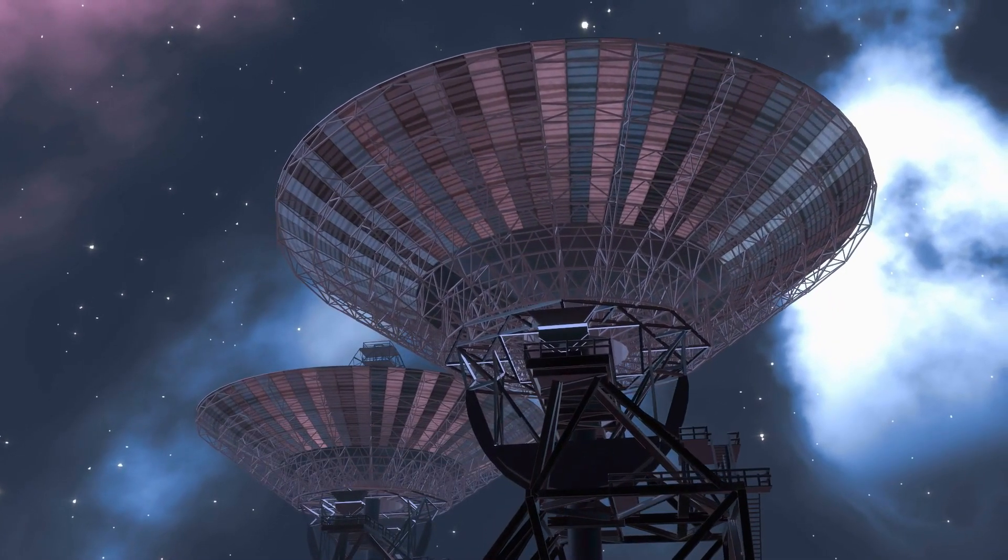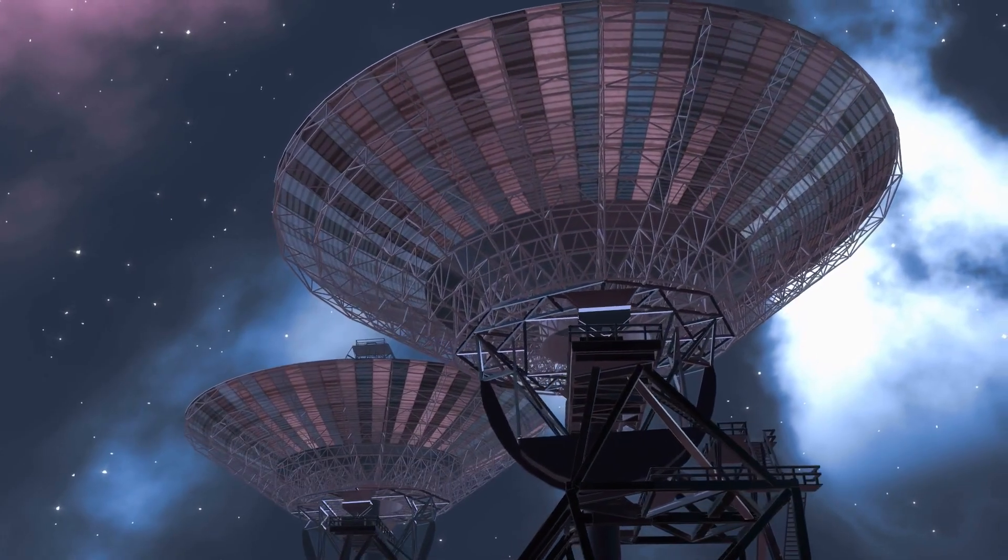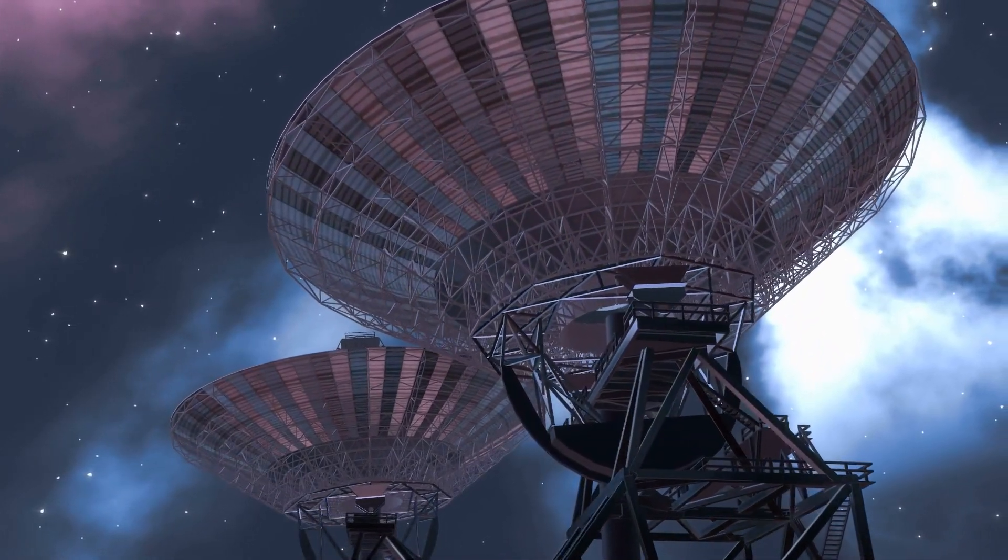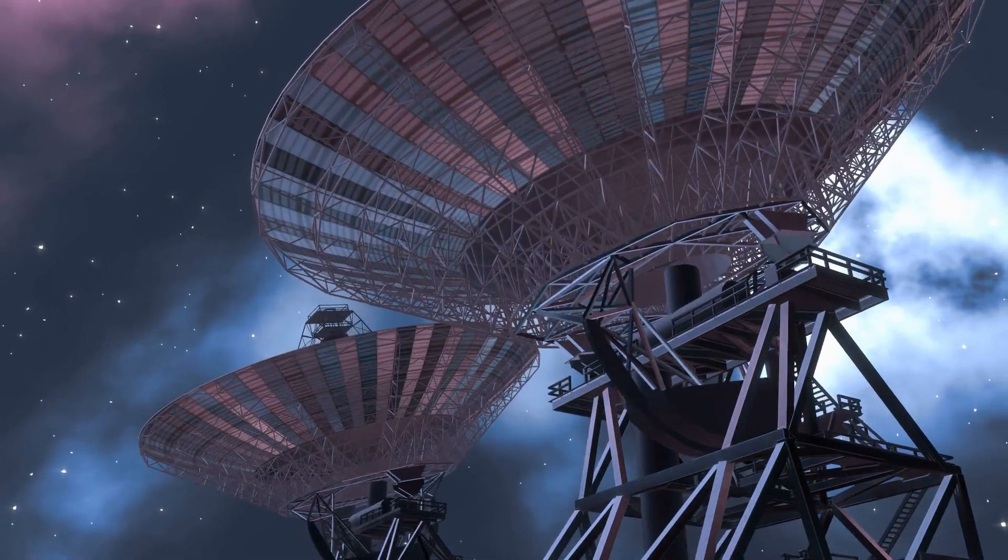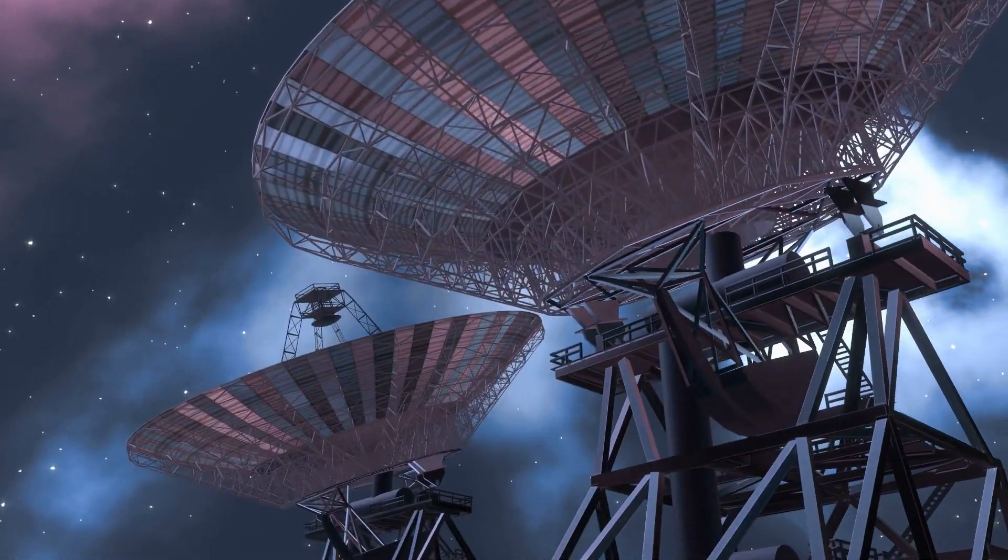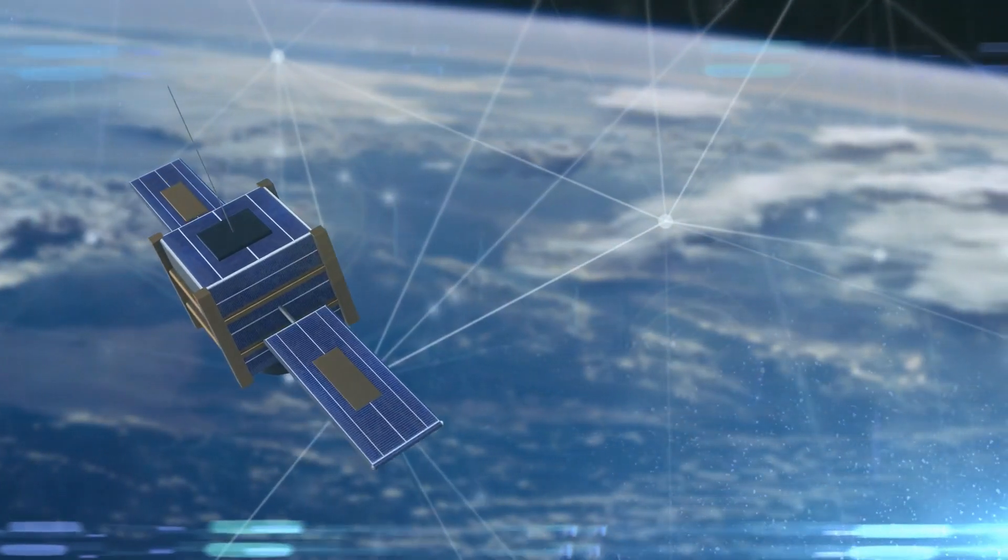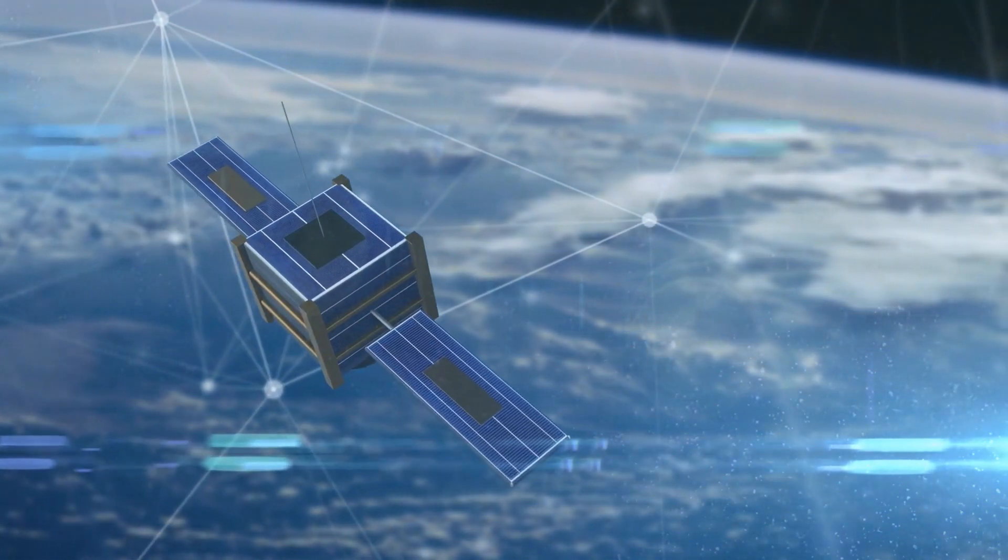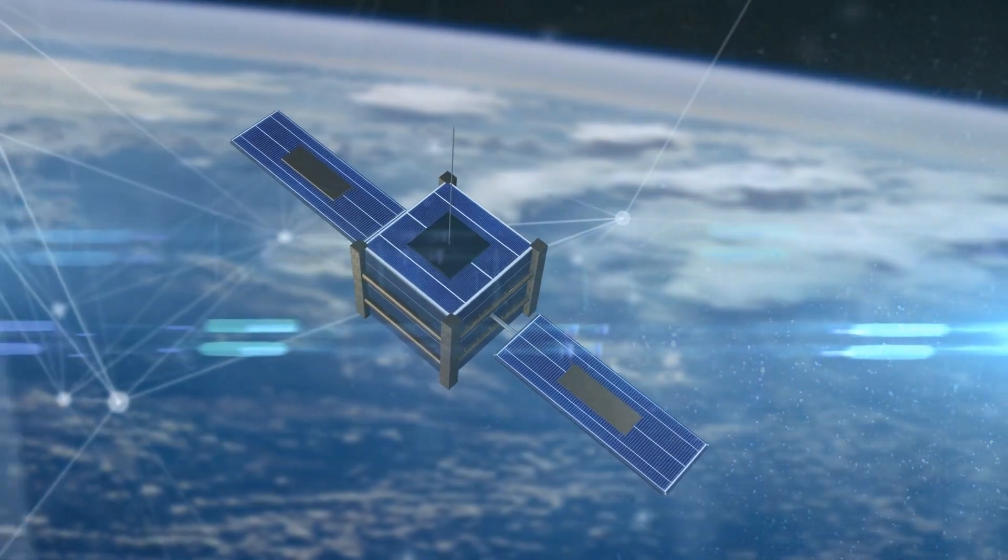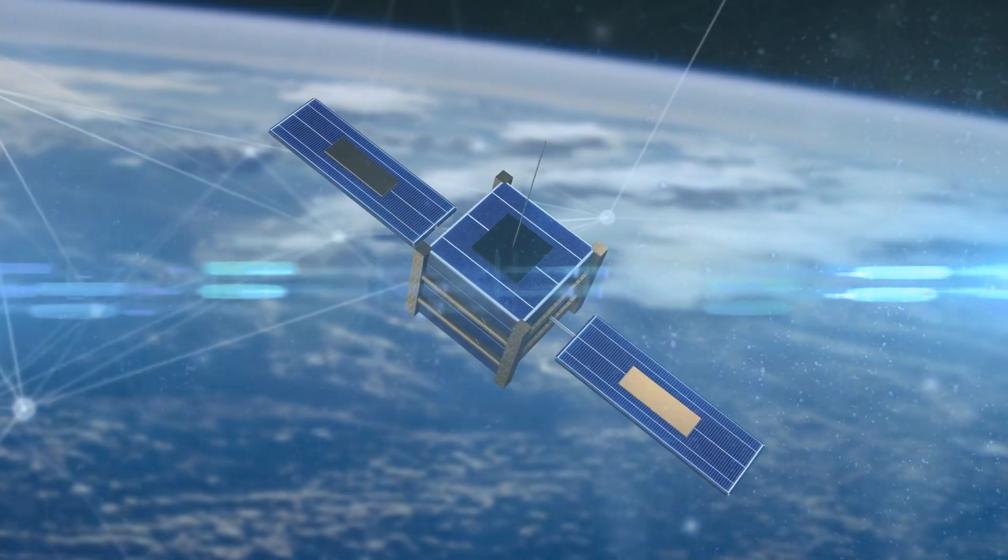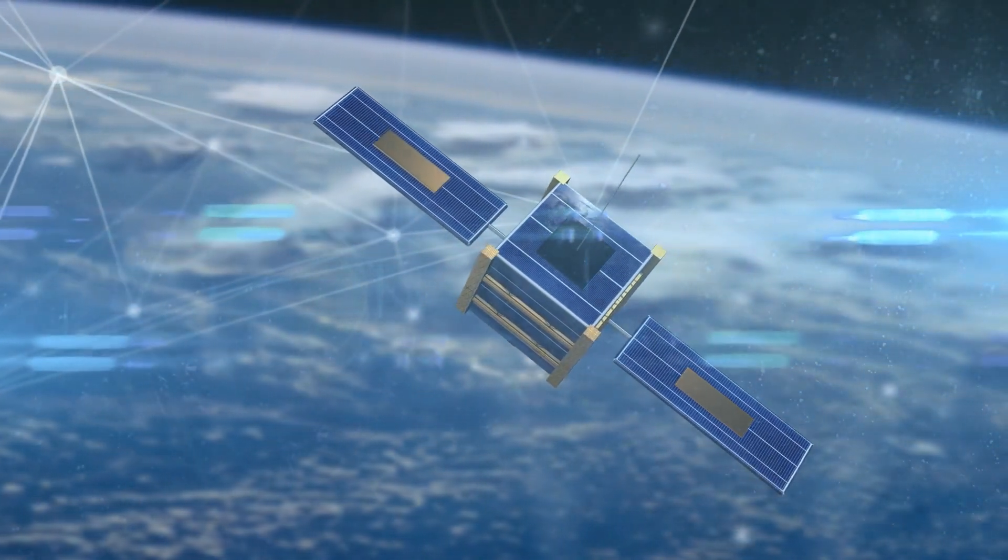The Deep Space Network, DSN, a world network of huge radio antennas that kept scientists in touch with Voyager as it went into space, was a key part of getting this information back to Earth. The DSN was very important for both getting the huge amount of data that the spacecraft sent back and sending orders across billions of miles of space.